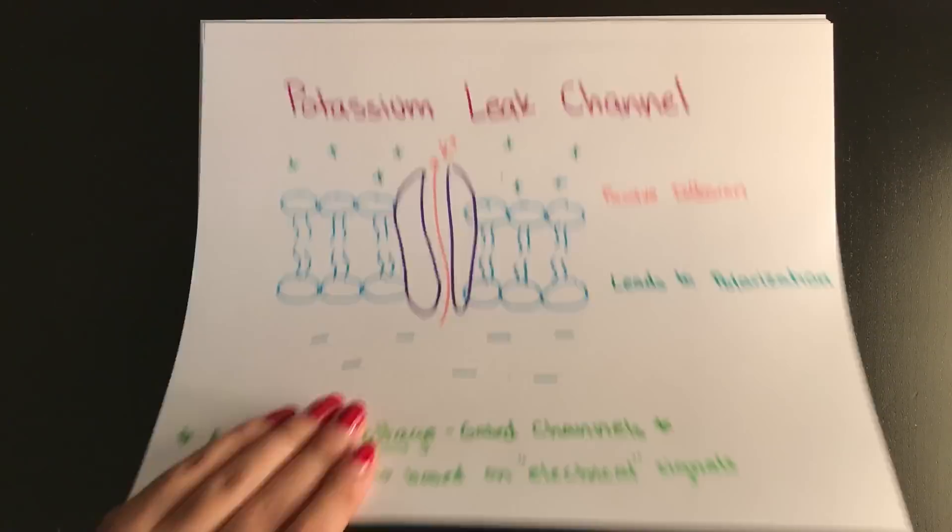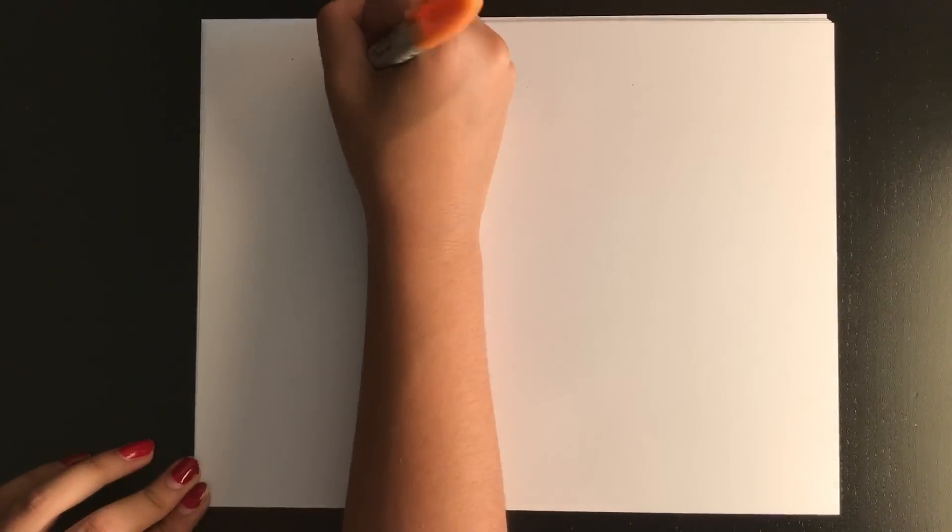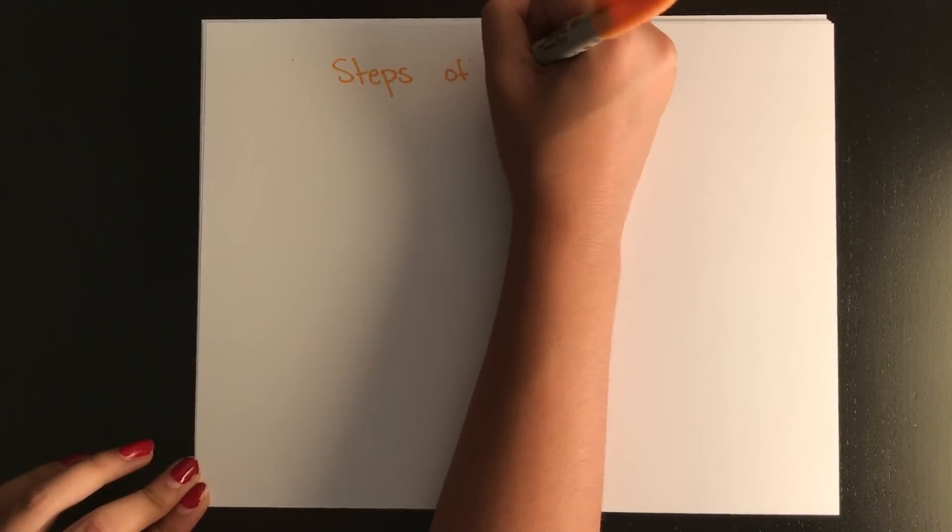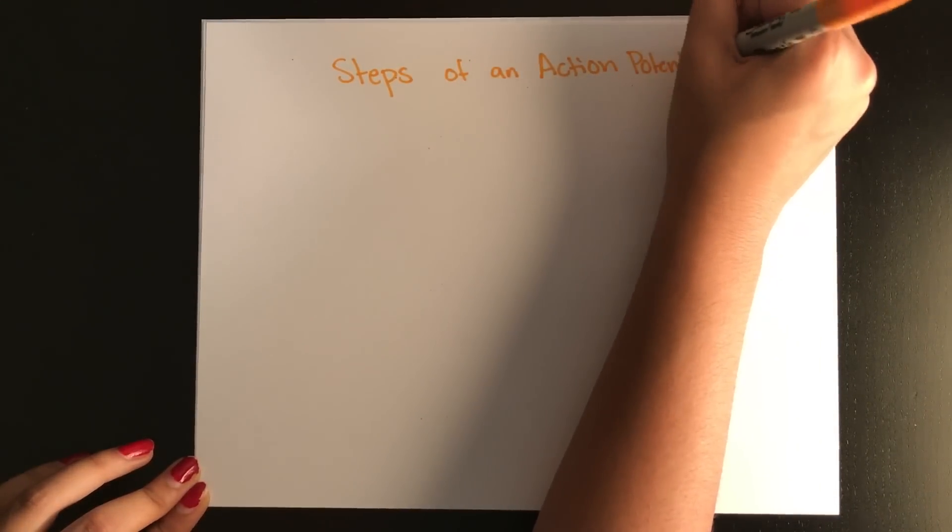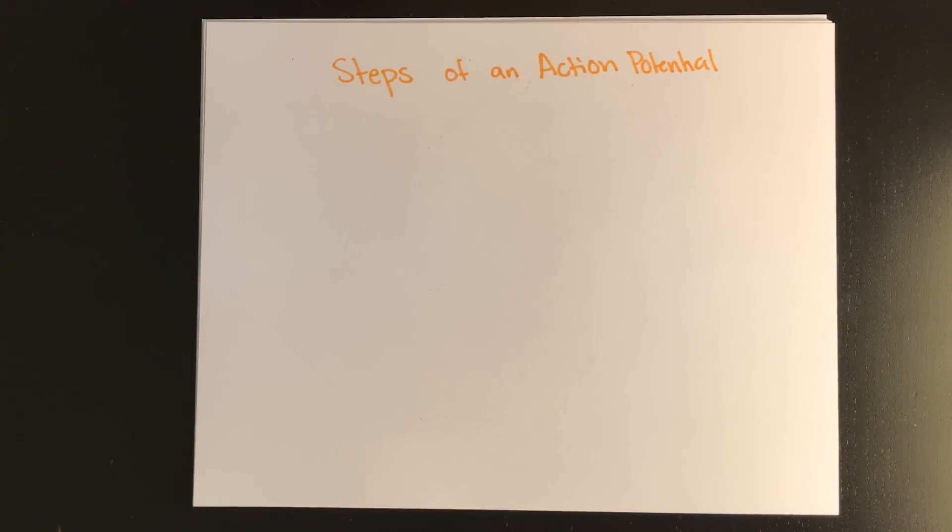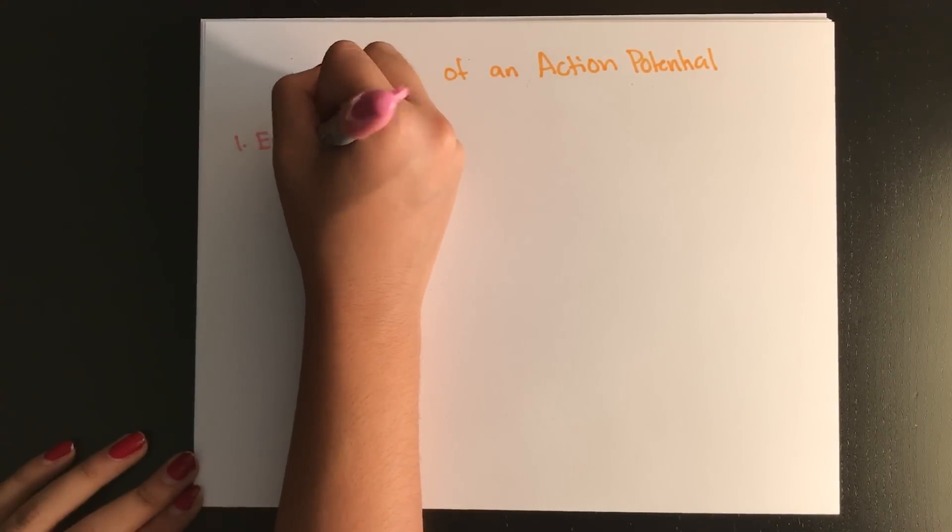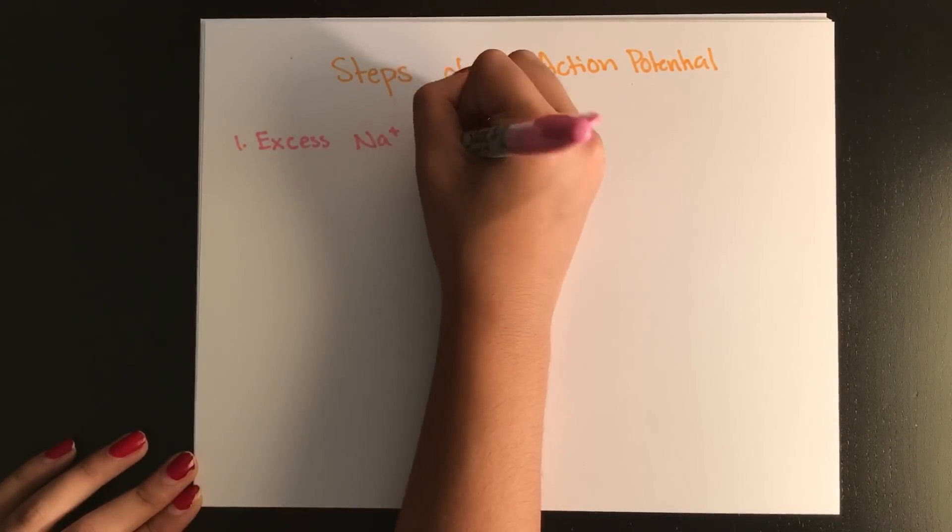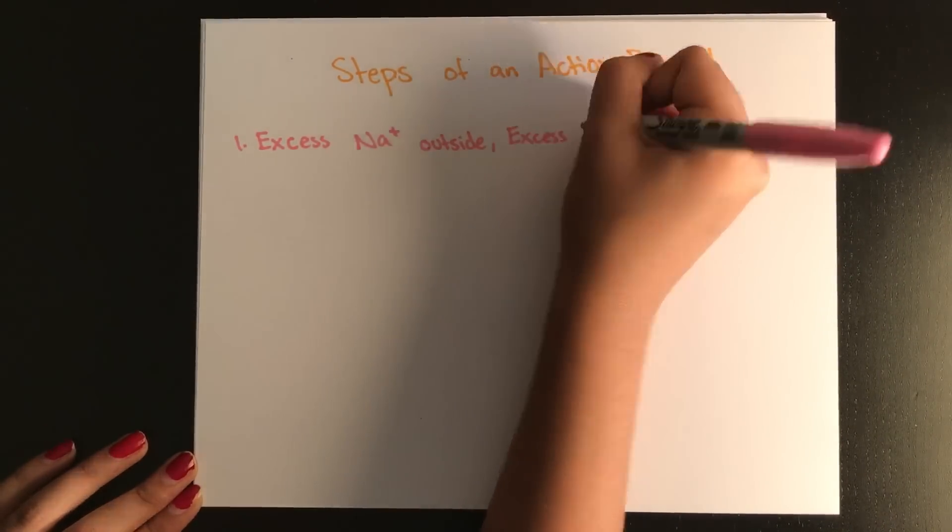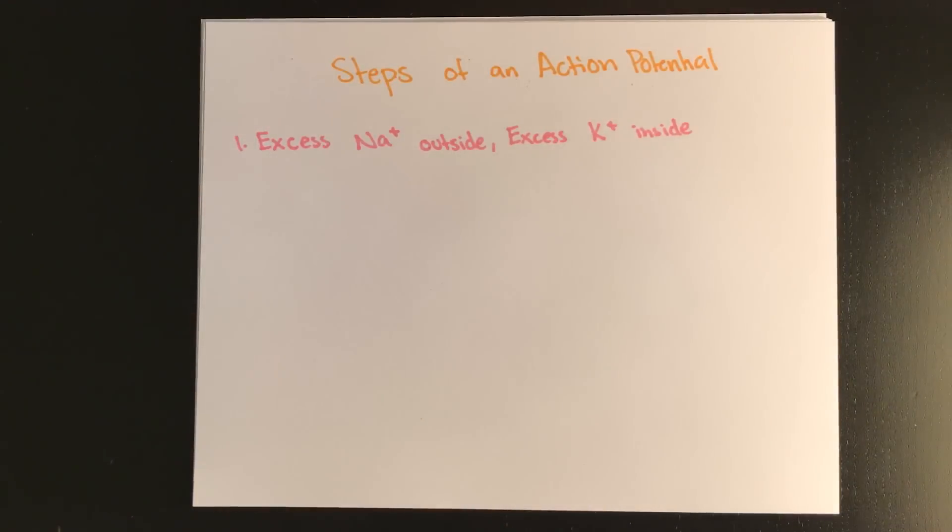So now we're going to discuss the steps of an actual action potential. An action potential is when enough stimuli is accumulated to send an impulse down the neuron. So this begins with an excess of sodium on the outside and an excess of potassium within. Even though some of the potassium gets out through the leak channels, we still consider there to be more potassium inside the cell.